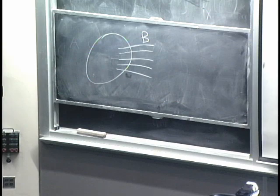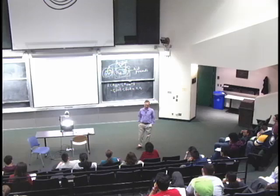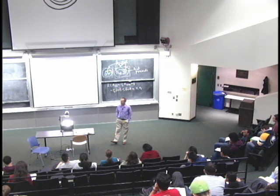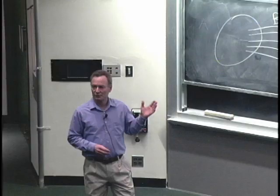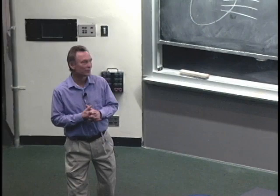To model this, we need two pieces: how phone calls get initiated, and how long calls last. We assume phone calls originate as a Poisson process with rate lambda — people don't coordinate, they pick up the phone at completely random times, with no dependencies. A Poisson model is reasonable here, and lambda is easy to estimate by observing the village. For call durations, we assume an exponential distribution with parameter mu, so the mean duration is 1/mu.